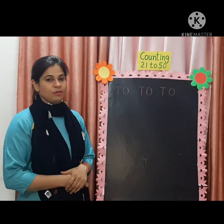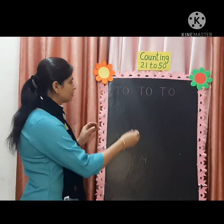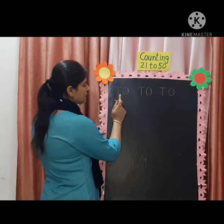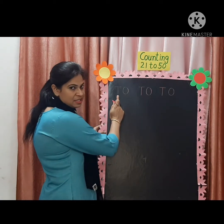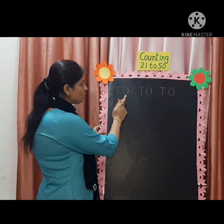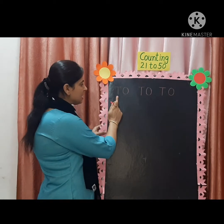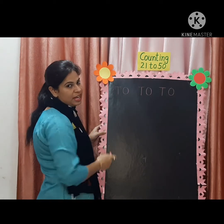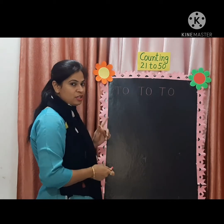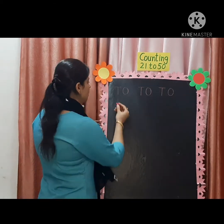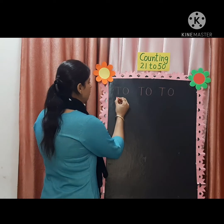Look at the board now. 1's, 10's. O stands for 1's and T stands for 10's. I have already told you about it. Now let's start counting.